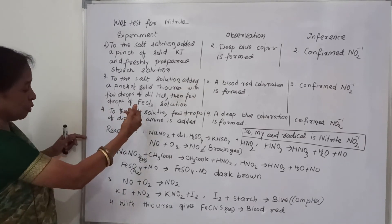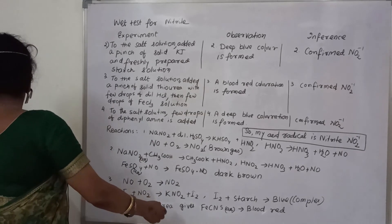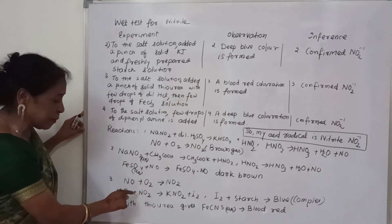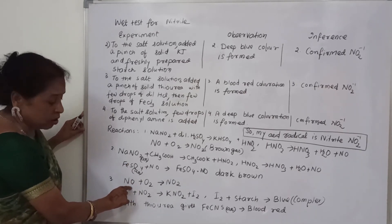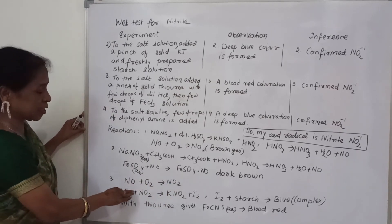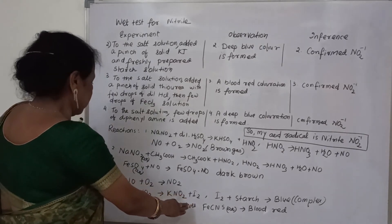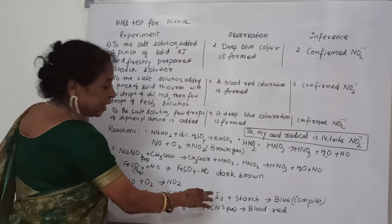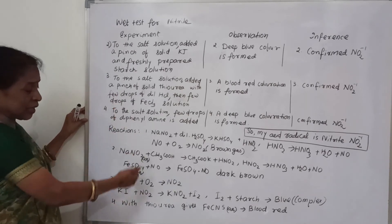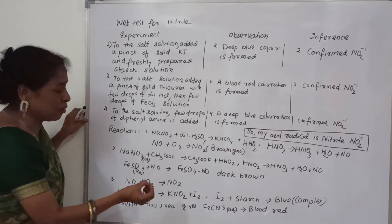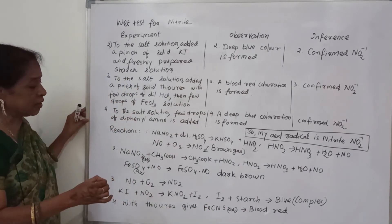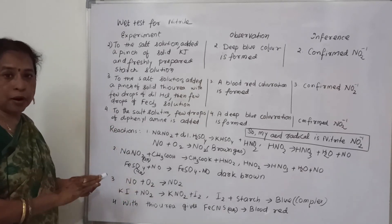For the third reaction, with solid KI: the same nitric oxide combines with oxygen to give NO₂. NO₂, when combined with potassium iodide, gives free iodine. This free iodine, when combined with starch, gives the blue color. With thiourea, a complex compound Fe(CNS) is formed, whose color is blood red.